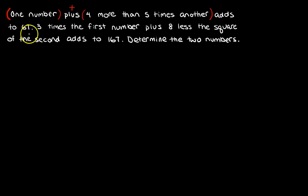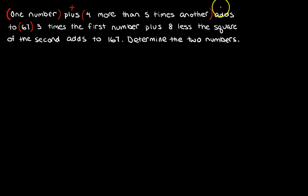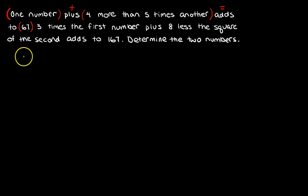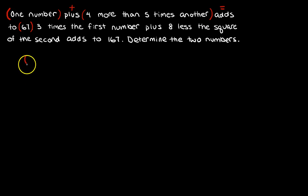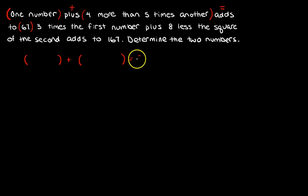Then it says 'adds to 67.' I was adding these two things — one number plus this number — and 'adds to' is telling me this is what it comes to: it equals 67. So I'm going to put everything into brackets — I think that really helps — and I'll have this thing plus the other thing, and it's going to equal 67.